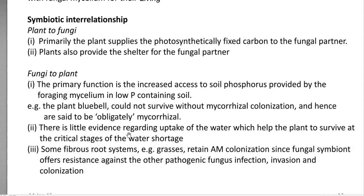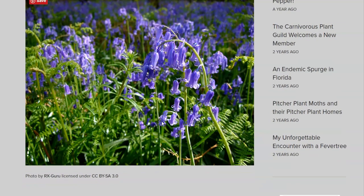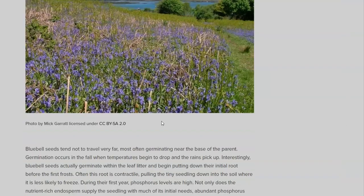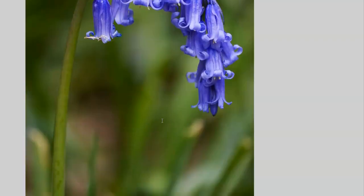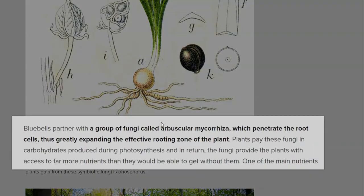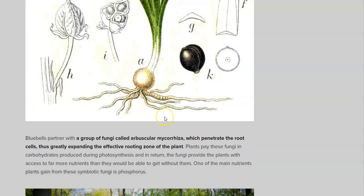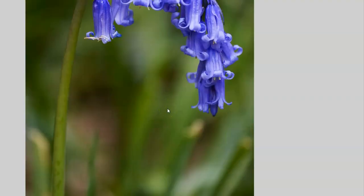A clear example is the bluebell plant, which commonly grows in the north-western region of Spain. These plants essentially require mycorrhizal associations in their roots for survival. A specific group of fungi — herbuscular mycorrhizal — can penetrate into the root cells, thereby expanding the effective rooting regions of the plant system. This helps in effective foraging of phosphorus and other nutrients for plants such as bluebell.